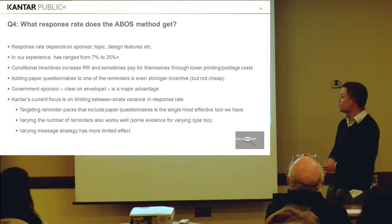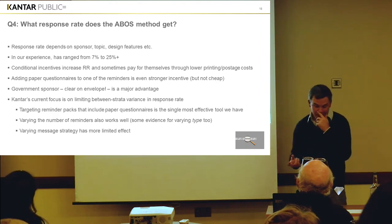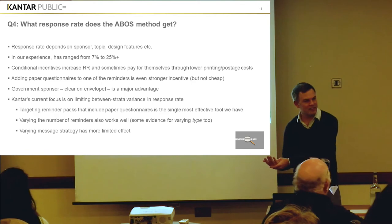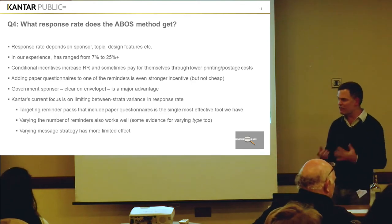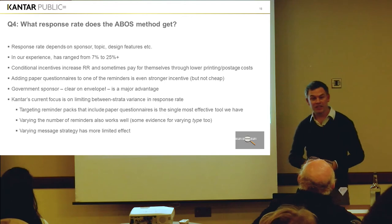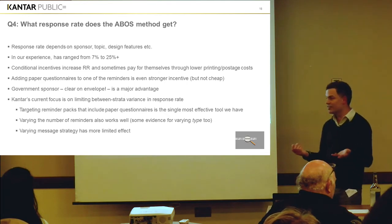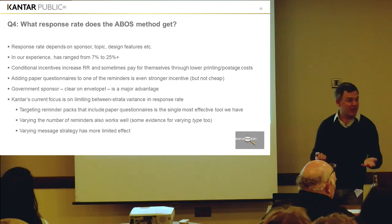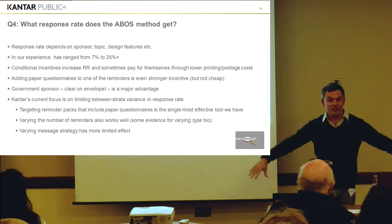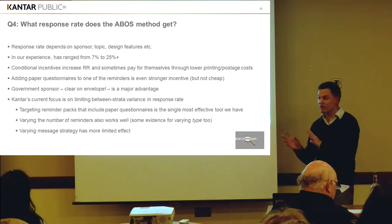So what response rate does the ABOS method get? It very much depends on the sponsor, the topic, the design features, and so on. Our worst was 7% and our highest is 25%, but we could have got higher than that. I've seen some very recent ONS data — similar sorts of surveys but much shorter — which have got over 30% in some conditions. The sample profile quality seems almost unrelated to the response rate itself. By far our best had a 9% response rate, but the response probability seemed to be more or less random in that the population fell out across about eight different dimensions almost exactly as it should have done. So that was a 9% response rate survey — 25% isn't as good as that. But that's a fairly well-known feature of survey research.